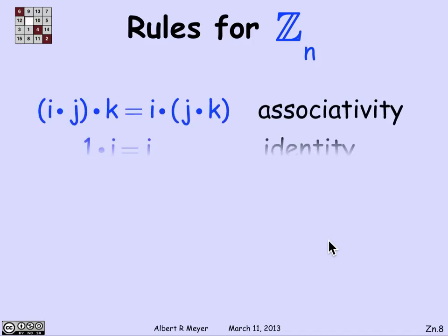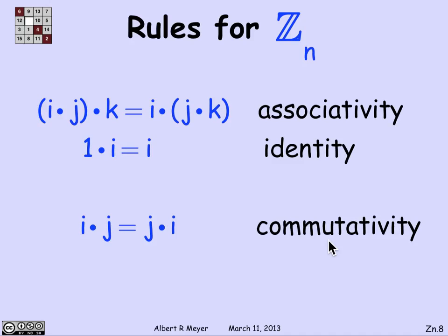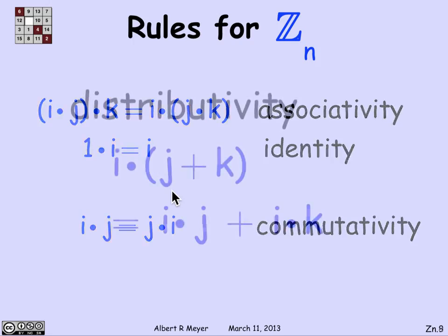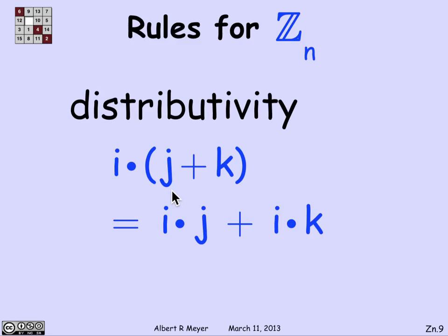And in fact, multiplication satisfies pretty much the same rules. Multiplication is likewise associative. There's an identity for multiplication called 1. 1 times i is i. Multiplication is also commutative. The one obvious omission here is inverses. You can't count on there being inverses in Z_n. And finally, there's an operation that connects addition and multiplication called distributivity, namely i times j plus k is ij plus ik. As you well know from ordinary arithmetic, and this rule works fine for remainders and working in Z_n.